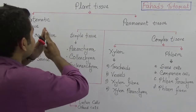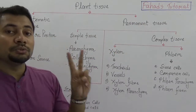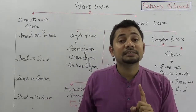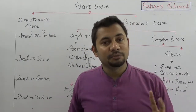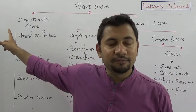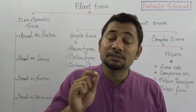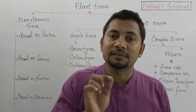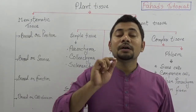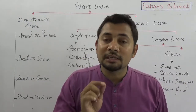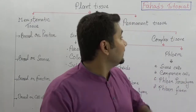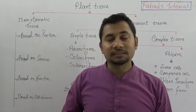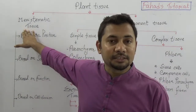In the case of plant tissue, it is usually divided into two big categories based on cell division. Number one: meristematic tissues. Number two: permanent tissues. In the case of meristematic tissues, those tissues are capable of cell division. Those tissues that are not capable of cell division are called permanent tissues.